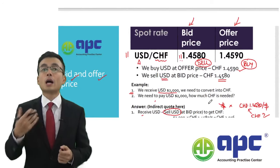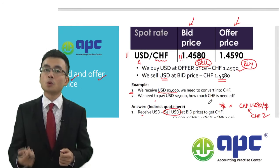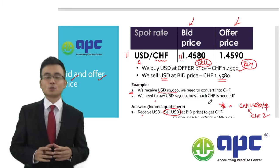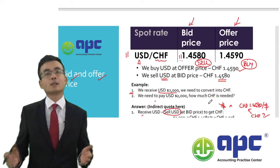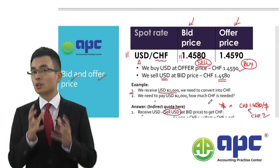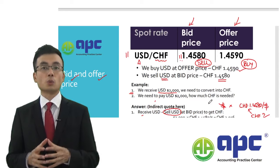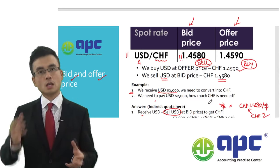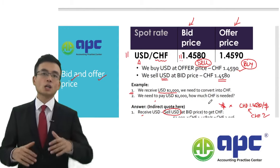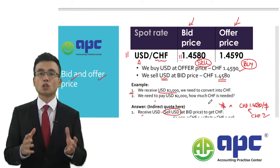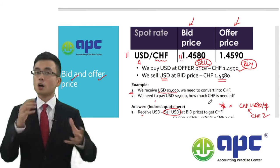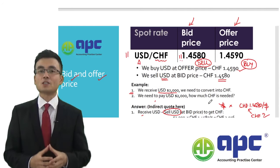The difference between 1.4580 and 1.4590 is called the spread. I will explain this in more detail in my article and also in my course. In the financial management course, I will also teach you how to combine foreign exchange rates with financial instruments — for example, the forward contract, the money market hedge, the currency futures contract, currency options, and the swaps contract.